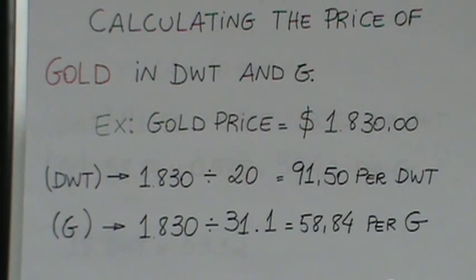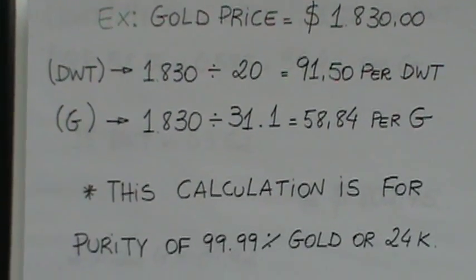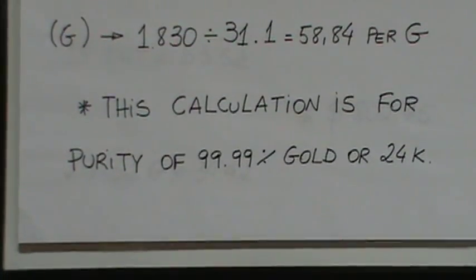And for grams, it's $1,830 divided by 31.1. That equals $58.84 per gram. And this calculation, again, is for pure gold or 24 karat.